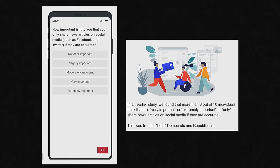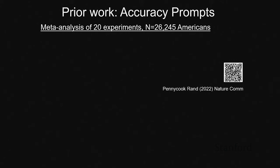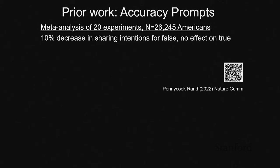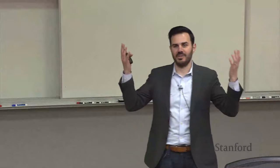You can also tell people that others think it's important to only share accurate content. We had a paper where we did a meta-analysis of 20 different experiments with over 26,000 American participants. Each had a control condition where people went through actual posts — some true, some false — and said whether they'd share them, or a treatment where something was done at the beginning to prime them to think about accuracy. We find that on average, prompting people to think about accuracy reduced sharing intentions for false claims by about 10 percent, with no effect on true claims. Importantly, these accuracy prompts aren't giving people any new useful information — they're just activating the concept of accuracy in their minds.